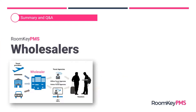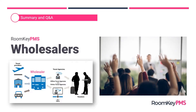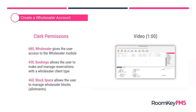Now to summarize our presentation — an overview of the wholesalers and how those functions work inside Roomkey. I'd love to open up the floor to any questions about wholesalers. Regarding permission codes, if you do not see the wholesaler available to select in the operations menu, the permission you need to enable is 680. Thank you all for joining in — I appreciate your time and I hope you have a wonderful day.